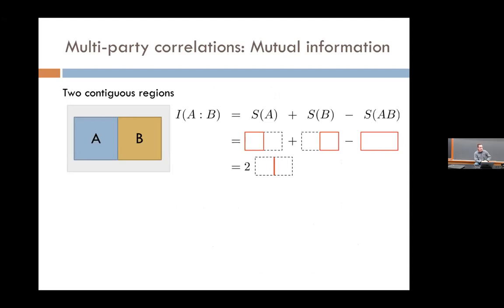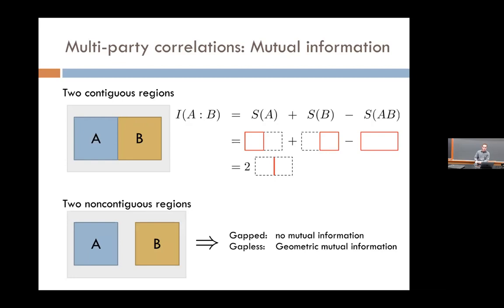In many-body systems, mutual information has a nice geometric interpretation. For an area law system, the entanglement of a region A is proportional to its boundary, so the mutual information between two touching regions A and B is proportional to the line segment at their interface. For two non-touching regions, behavior differs: if the system is gapped, mutual information is exponentially small; if gapless, there's power-law dependence because mutual information lower-bounds the existence of correlations.